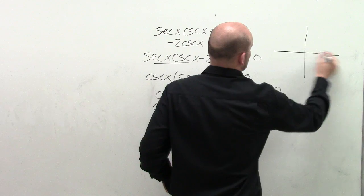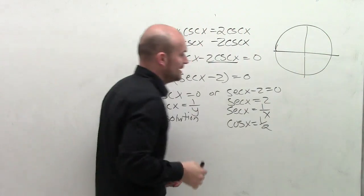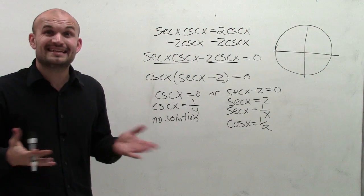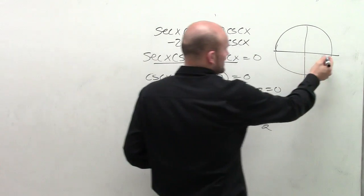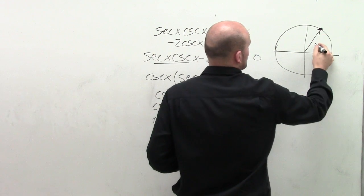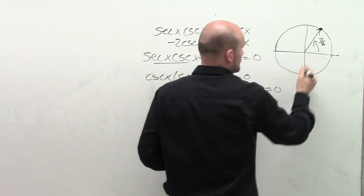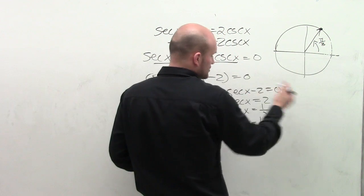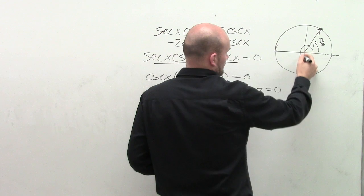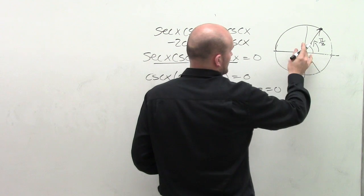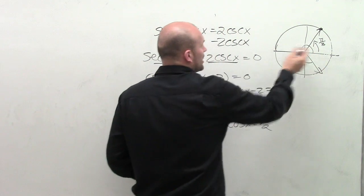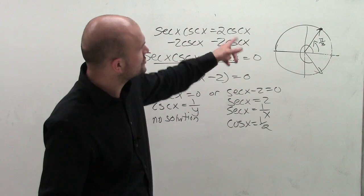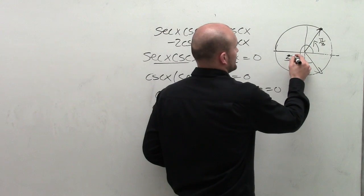So what I first do is look on the interval of 0 and 2 pi to figure out when is cosine of x equal to 1 half. So cosine of x is equal to 1 half at my first angle, which is pi over 3. And it's also equal to 1 half at 5 pi over 3.